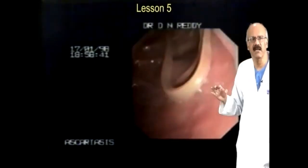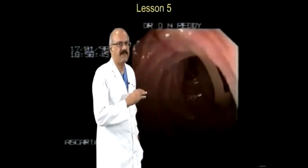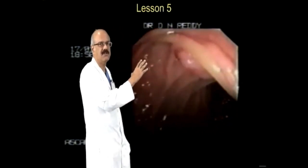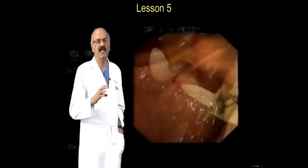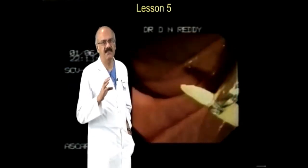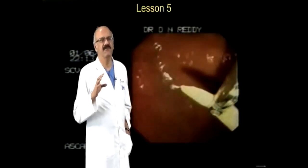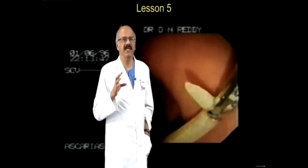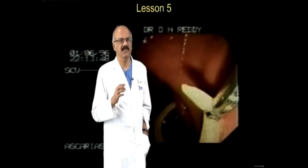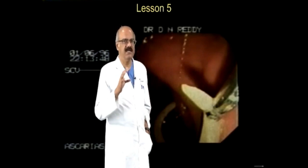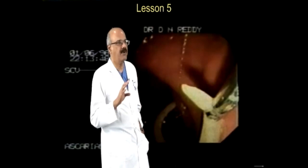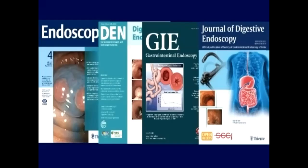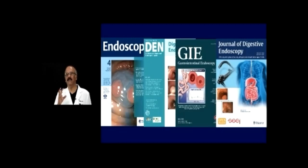Finally, something I learned many years back: an Ascaris worm trying to cannulate the papilla. You can see what it does — it doesn't suddenly go into the ampulla. It goes in very slowly, palpates, and then gently gets in. The cannulation rate of Ascaris for the bile duct is 100%. Because if it goes into the pancreatic duct, it dies. Unfortunately for us in endoscopy, if you go into the pancreatic duct repeatedly the patient gets pancreatitis. You have to be very gentle in therapeutic endoscopy — only when you are very careful can you actually do benefit to the patient.